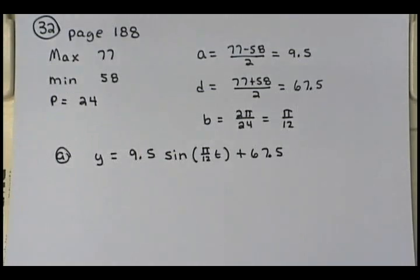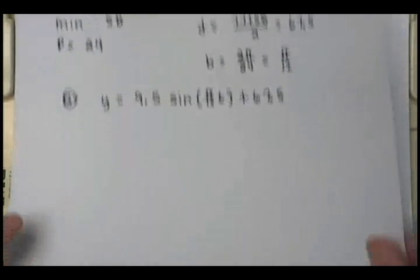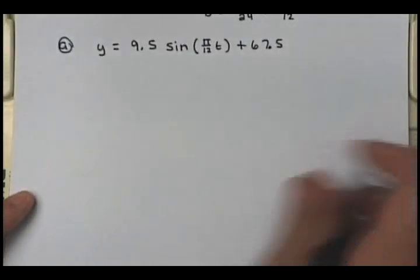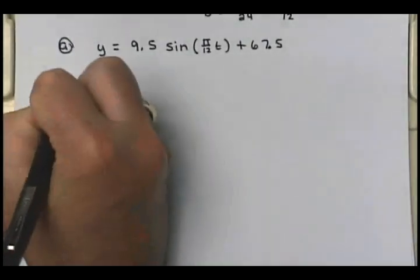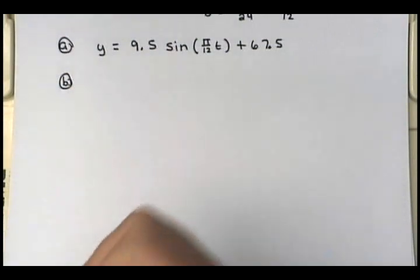So for part A, my sinusoidal equation would be 9.5 times the sine of (π/12)T, plus 67.5. Does everybody see the A part?